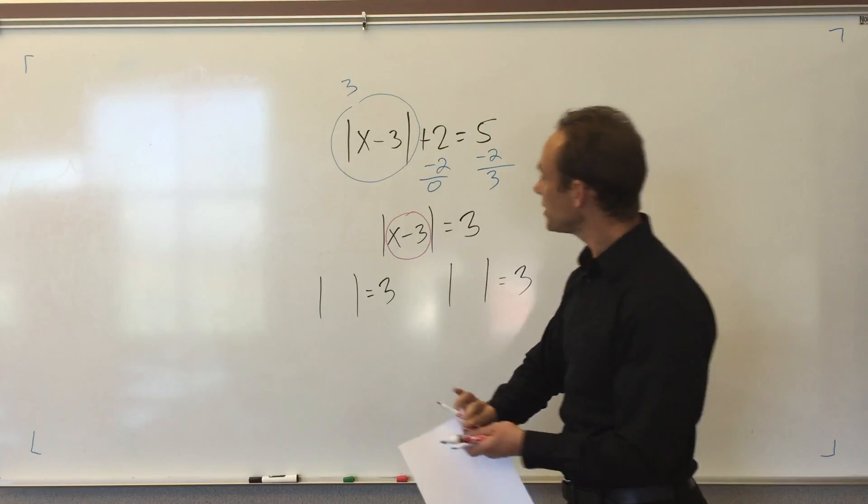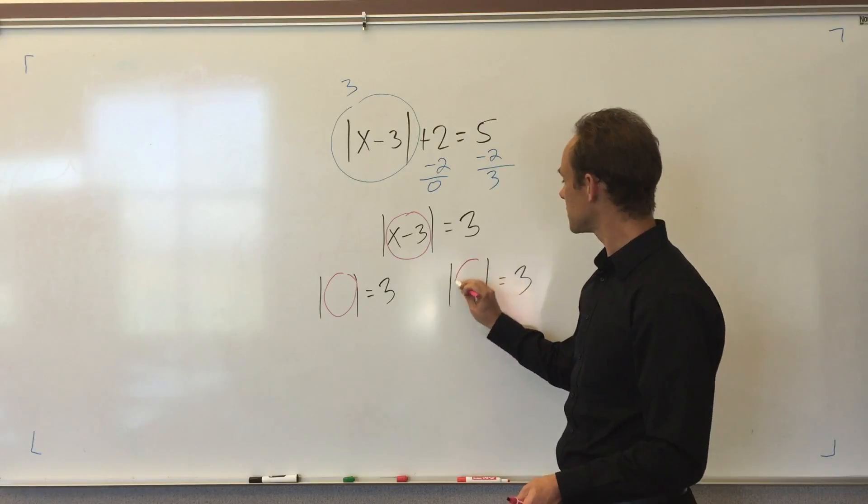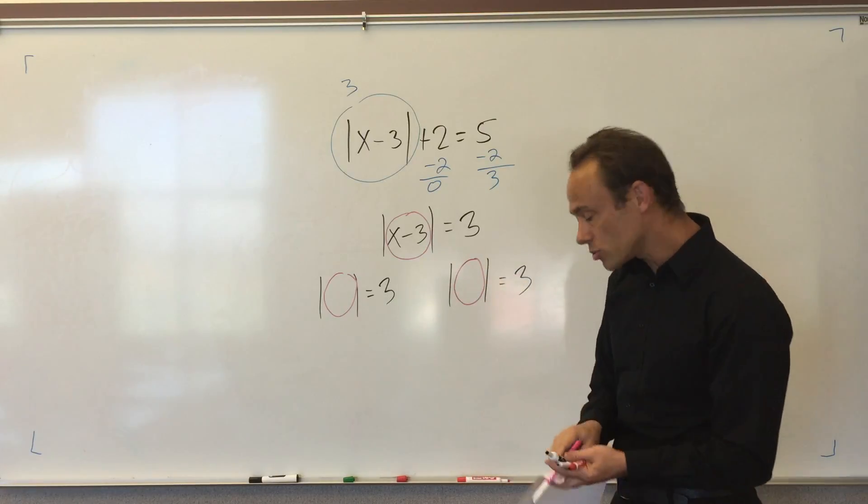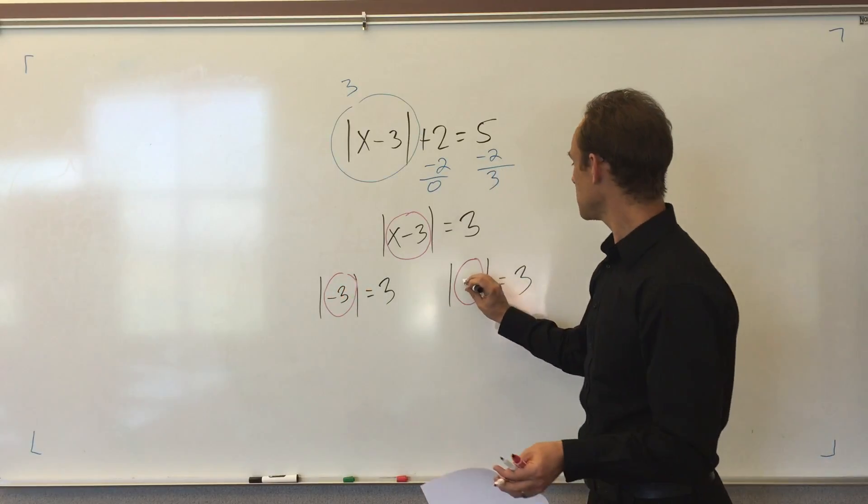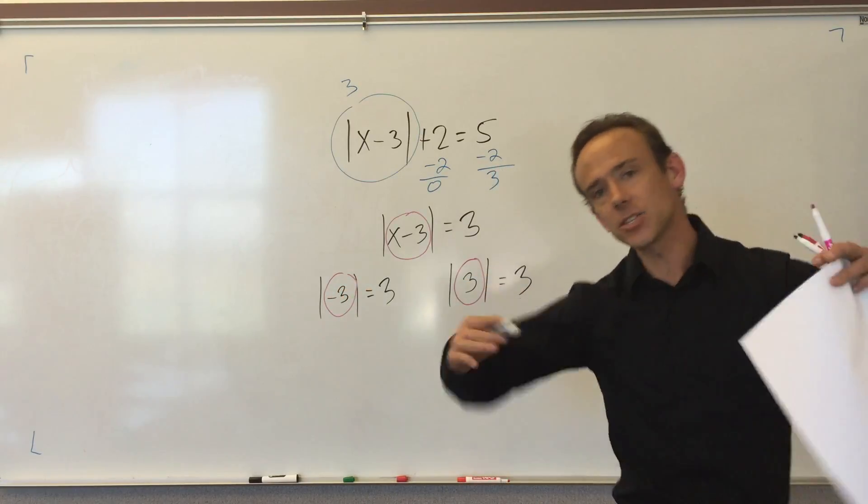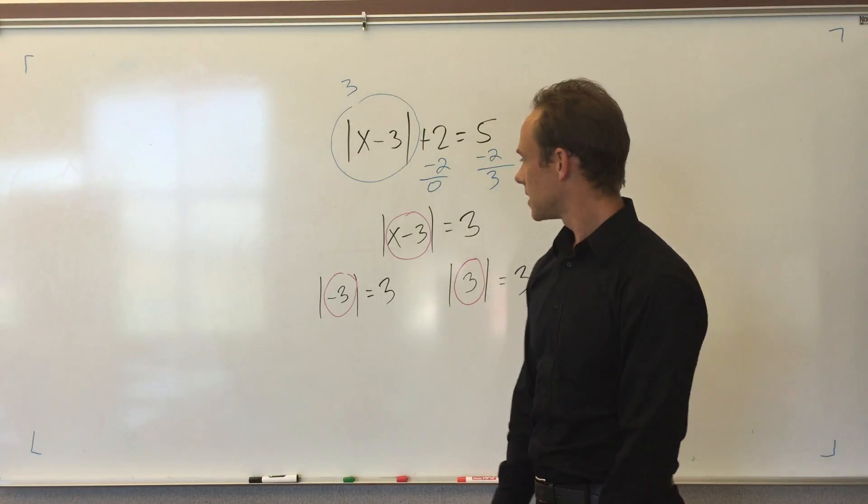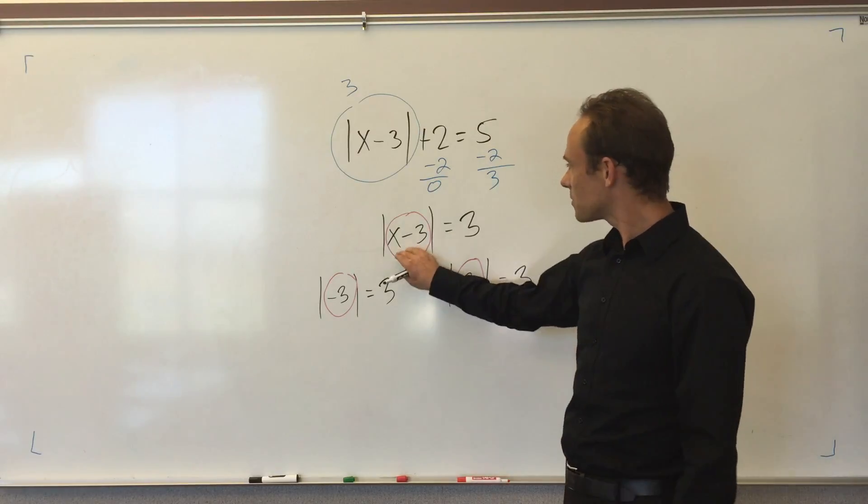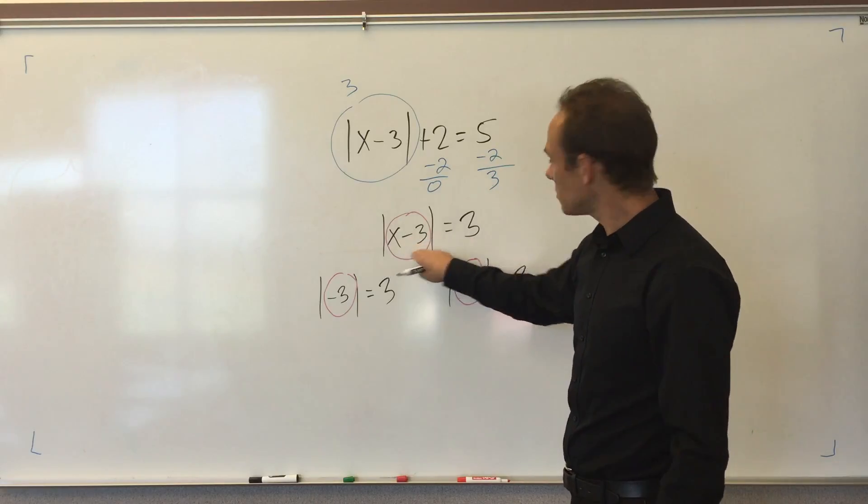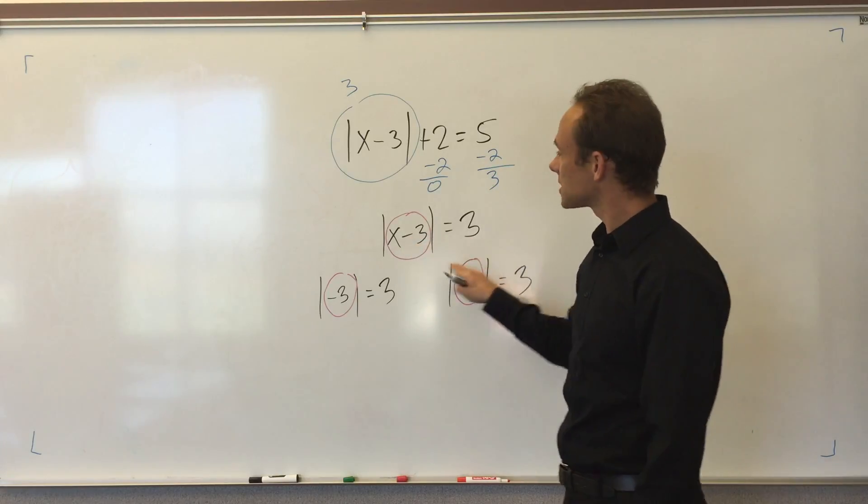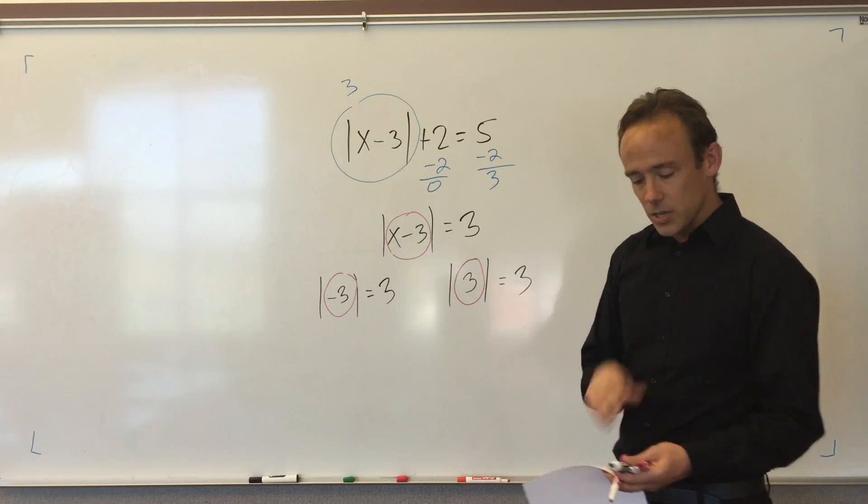There's two things that I could put into this circle to make these equations true: either negative 3 or positive 3. That's the trick with the absolute value. It means distance from 0. The absolute value of x minus 3 is the same as 3, so its distance from 0 is 3, so it has two options: either x minus 3 is negative 3 or x minus 3 is positive 3.